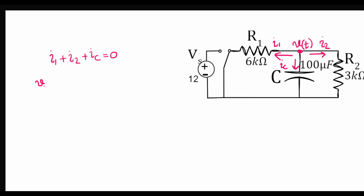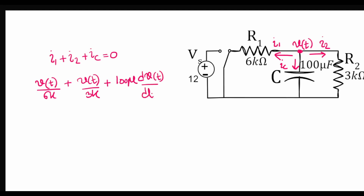Now let's write these currents as a function of voltage. I1 = V(t)/6k, I2 = V(t)/3k, and the current through the capacitor is C·dVC/dt. With C = 100 micro, this becomes 100 micro × dV(t)/dt. The sum of these three currents equals 0.